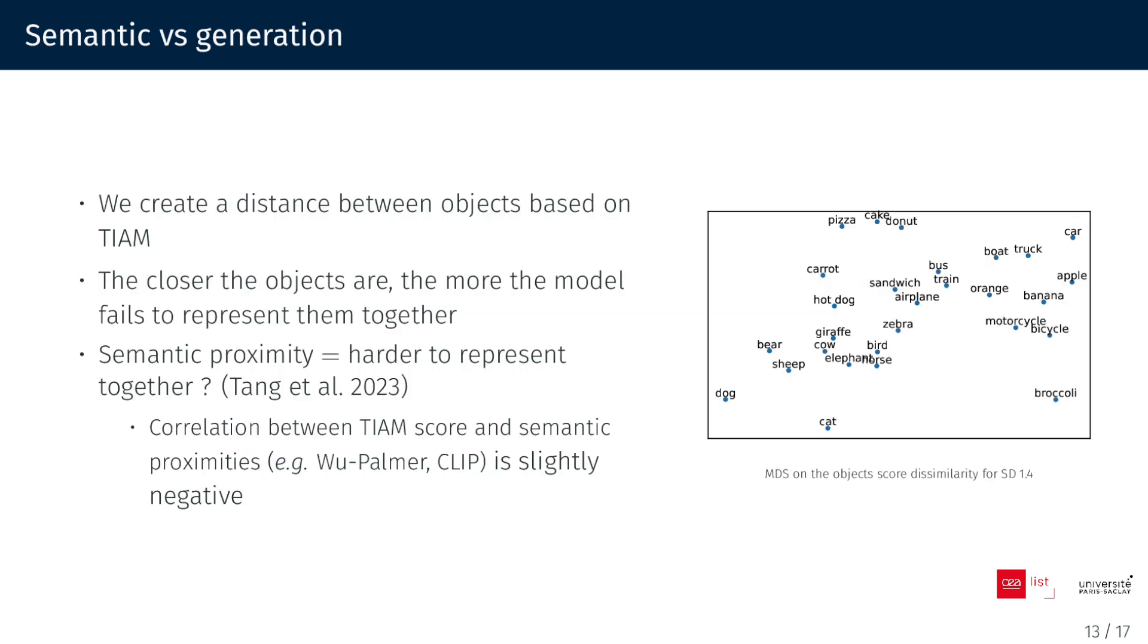Also, based on the TIAM score, we can create a distance measure between objects. The closer objects are, the more the models struggle to represent them together. For stable diffusion 1.4, it appears that we can group certain sets of animals, for instance. It seems that models struggle to generate similar objects together.